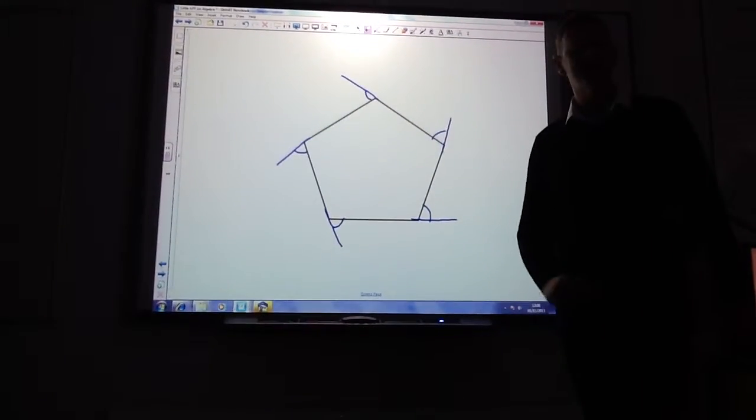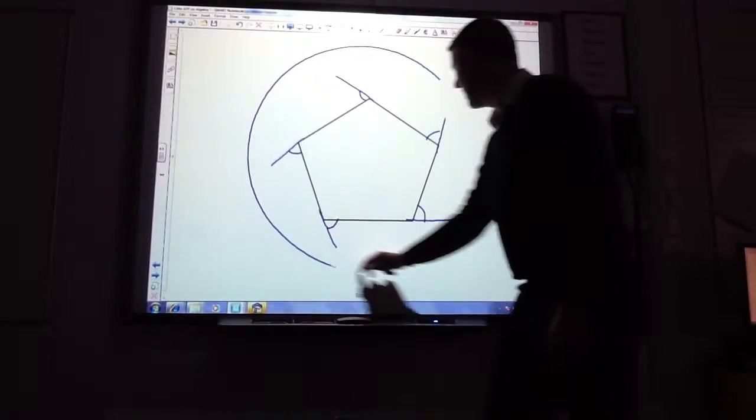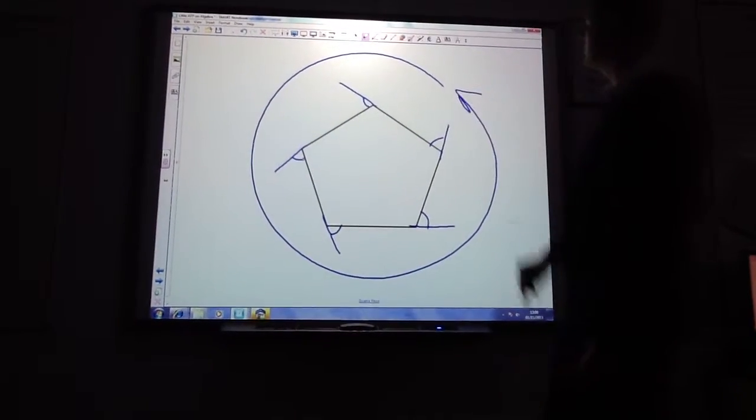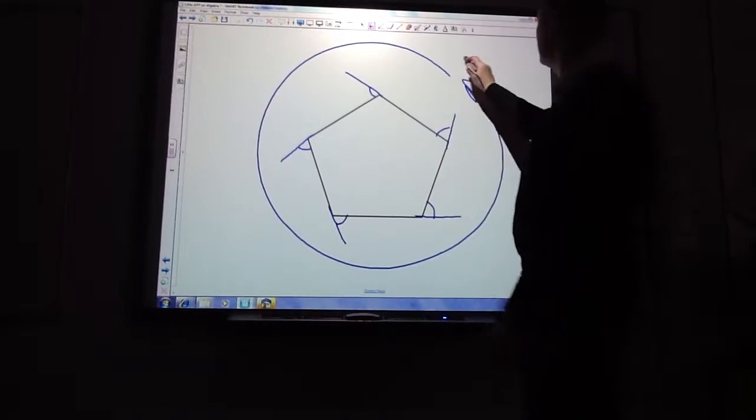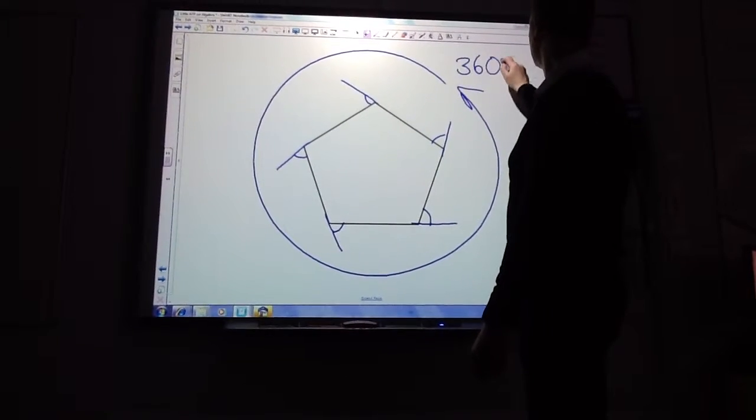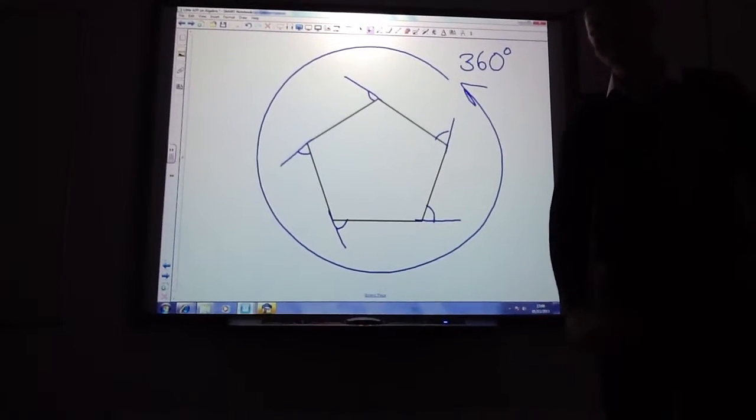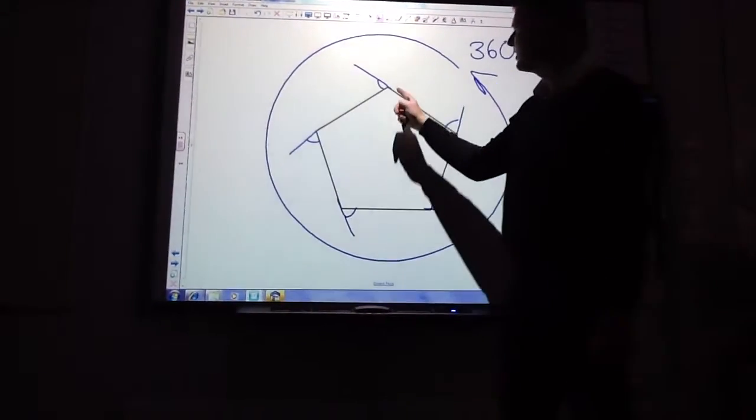And you say to yourself, if I spun that firework around, how many degrees would it spin? It would spin 360 degrees, because that's what's in a circle. Then say to yourself, how many corners would I turn?